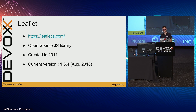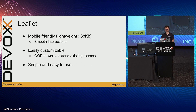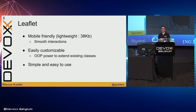Leaflet is a JavaScript library, it's open source and it allows you to display a map. It was created in 2011 and the last version was released last August. It's mobile-friendly, it's very lightweight. It's built with the OOP paradigm so you can easily extend existing classes to create your own components. And it's very simple and easy to use.